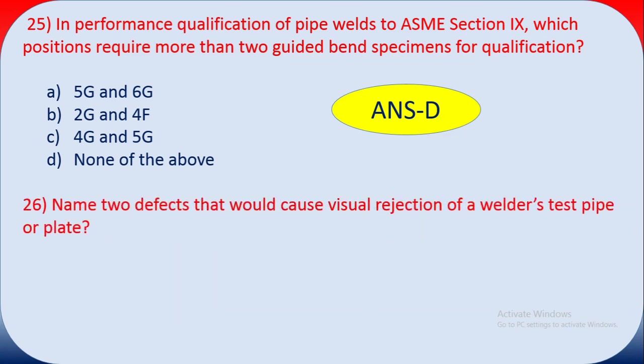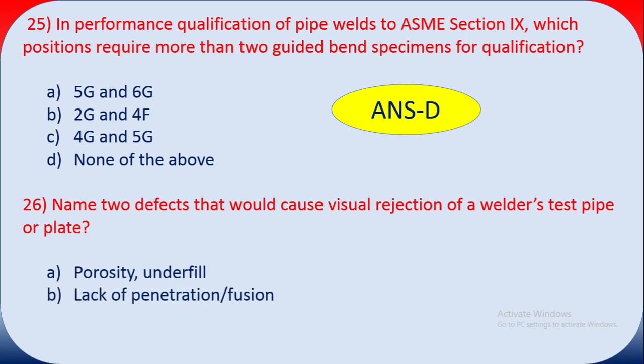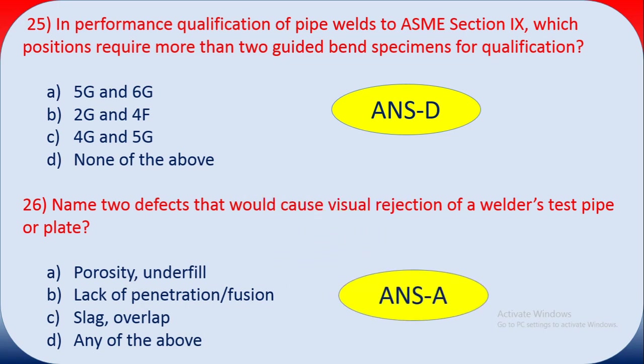Question twenty-six: which defect would cause visual rejection of a welder test piece on plate? Options include porosity and underfill, lack of penetration and fusion, slag and overlap, and any of the above. Lack of penetration and fusion can be inside the weld and may not always be visible. The correct answer is A — porosity and underfill.